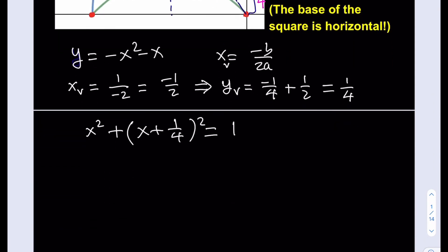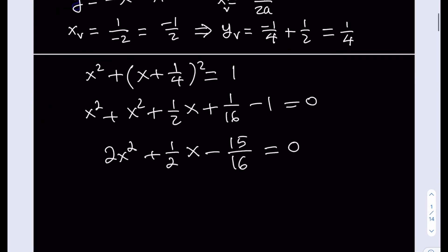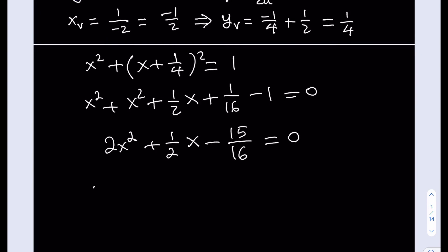Let's solve this quadratic equation by expanding. That gives us x squared plus 2 times (x)(one-half) — which is one-half x — plus one-sixteenth. Subtracting 1 from both sides and combining like terms gives us 2x squared plus one-half x, and one-sixteenth minus sixteen-sixteenths is negative fifteen-sixteenths, all equal to zero.